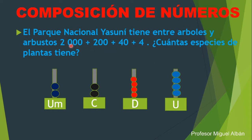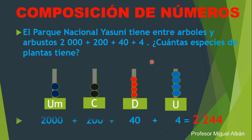El ejercicio dice que el Parque Yasuní tiene entre árboles y arbustos 2.000 más 200 más 40 más 4. Los 2.000 se representan en las unidades de mil con dos bolitas; las centenas con dos bolitas representando 200; las decenas con cuatro bolitas representando 40; y las unidades con cuatro elementos. Razonando: 2.000 + 200 + 40 + 4 da como resultado 2.244 especies.